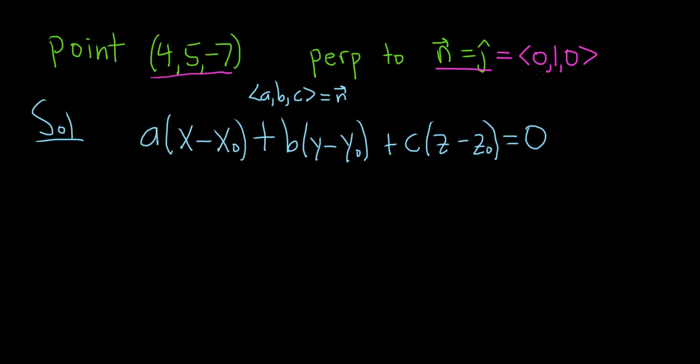So it's given to us in this problem. So our a is equal to 0, our b is equal to 1, and our c is equal to 0. And x₀, y₀, z₀, that's a point on our plane. So that's also given to us in this problem.